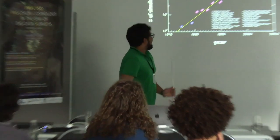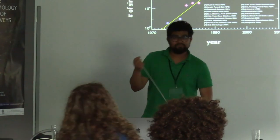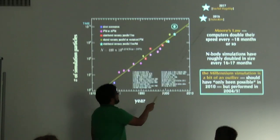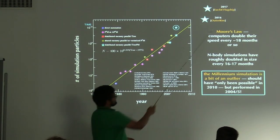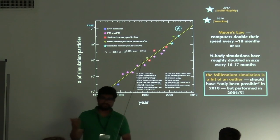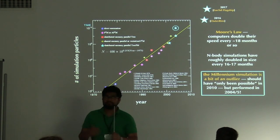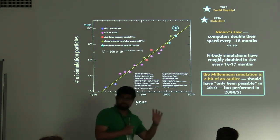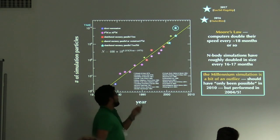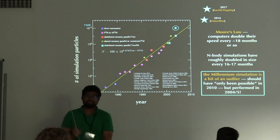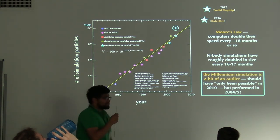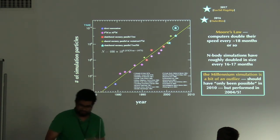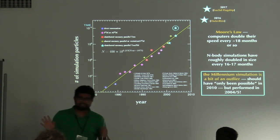In recent times even bigger calculations have been possible. In 2016 and 2017 there were the Outer Rim and Euclid Flagship projects — the Euclid Flagship simulation now has eight trillion particles, serving as the flagship simulation for the Euclid space telescope which launched just a couple of days ago. Something Holmberg — or his graduate students moving light bulbs — would never have anticipated.